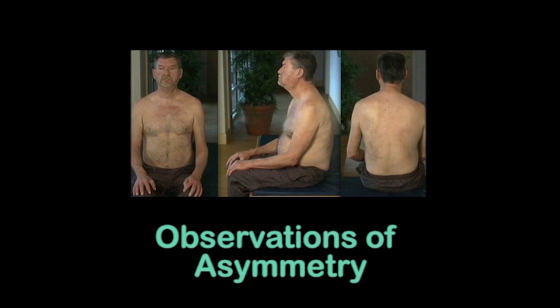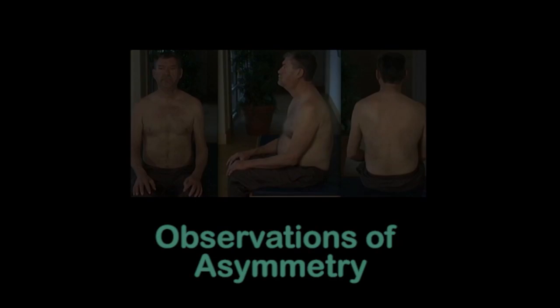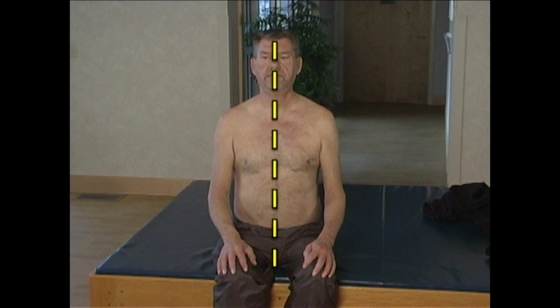Now let's take a look at Clint — from the front, the side, and from the back. I start with the base of support. Is his weight evenly distributed over both sides? Unequal weight distribution could also affect alignment of the trunk and the head. Are the trunk and head in midline? From the front, it looks like Clint sits fairly symmetrically.